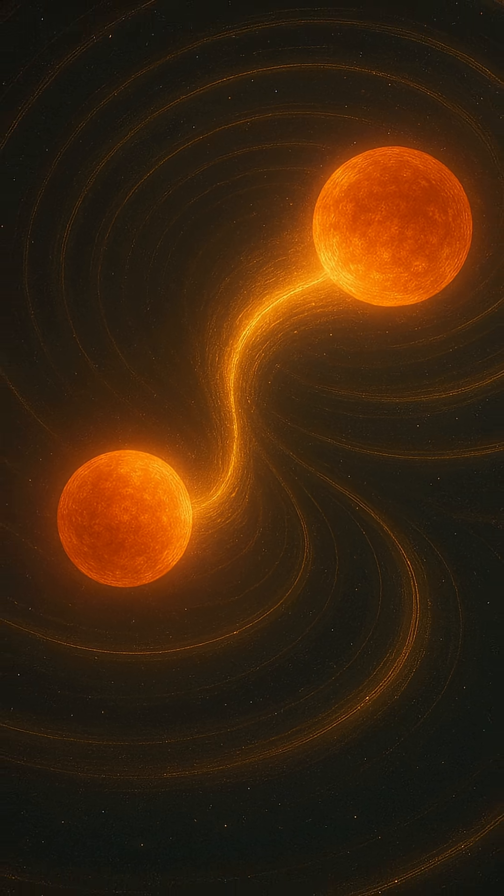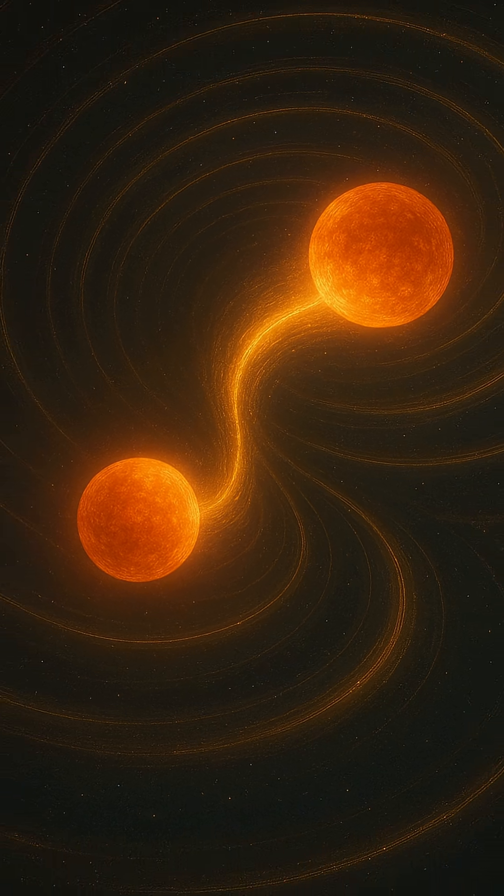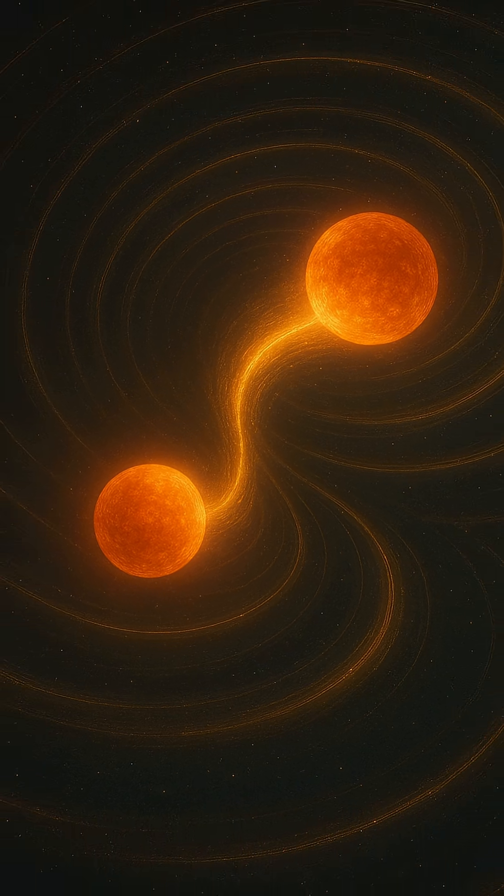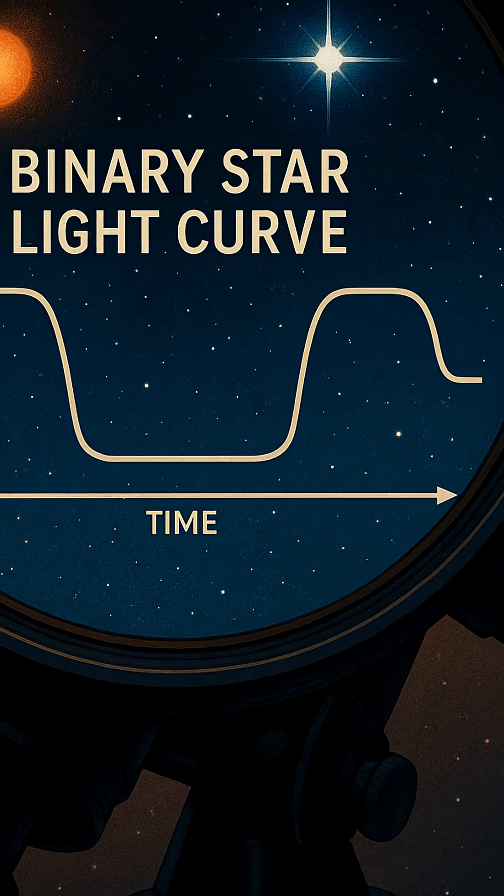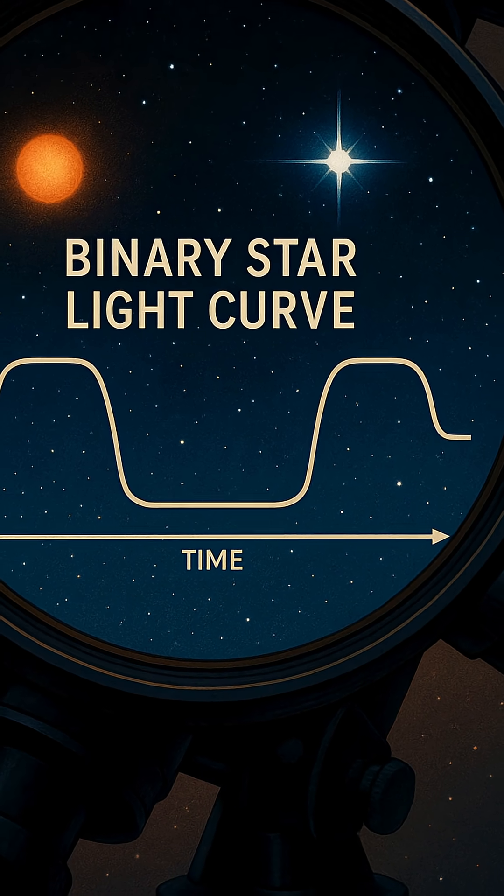Sometimes the smaller star swells into a red giant, expanding beyond its limits until gas begins to spill into the stronger gravity well of its neighbor. This new influx of matter can cause the recipient star to burn hotter and brighter, rejuvenating it.